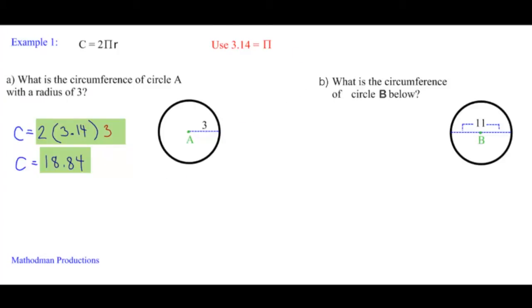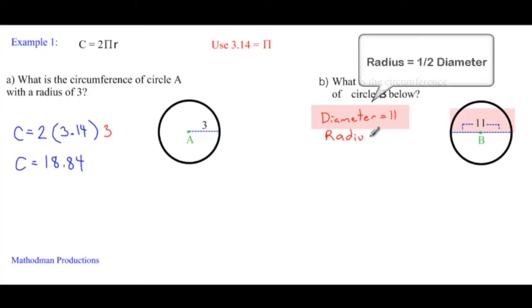For the example to the right, what is the circumference of circle B below? Remember, you need a radius in the formula to find the circumference of a circle. In circle B, we're given a diameter of 11. Well, if you didn't know, the radius is just half of the diameter, so the radius is 5.5.